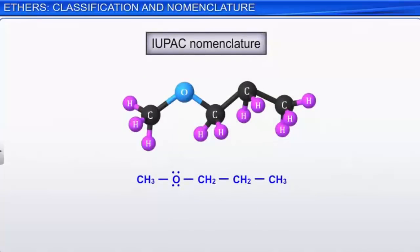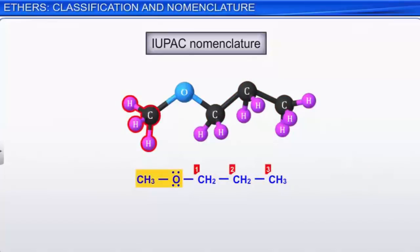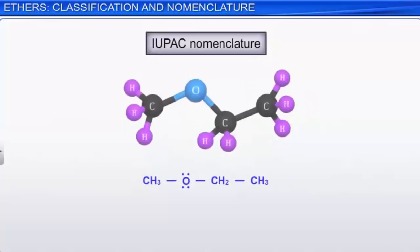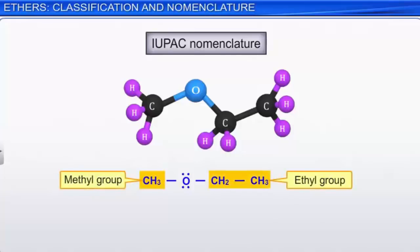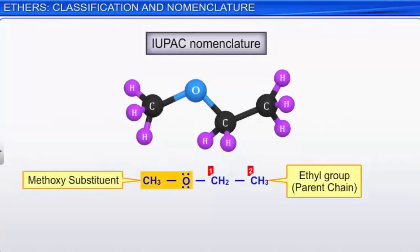IUPAC rules for ether nomenclature are based on descriptions of ethers as alkoxy-substituted alkanes. The larger group is considered to be the parent hydrocarbon, and a number gives the location of the alkoxy substituent. This makes the IUPAC system more versatile than common names for ethers. For example, a molecule with a methyl group and an ethyl group — where the ethyl group contains more carbons and is therefore the parent chain — is named methoxyethane.